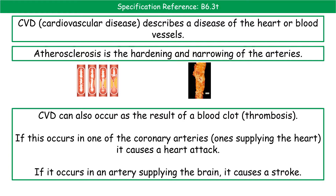Looking at this series of pictures, the first shows a normal artery — clear, blood can flow through with no issues. In atherosclerosis, deposits of fat build up along the edge, narrowing the artery until it can completely block it. Every additional fat deposit makes the artery narrower, so less blood flows through, and the artery hardens so it can't stretch and recoil as normal.